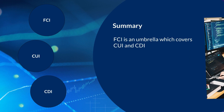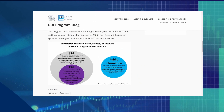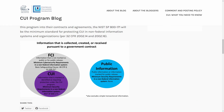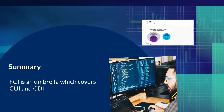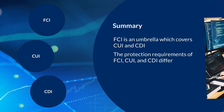FCI is an umbrella which covers CUI and CDI. In a blog article, the National Archives Information Security Oversight Office stated that all CUI in possession of a government contractor is FCI, but not all FCI is CUI. We also learned that the protection requirements of FCI, CUI, and CDI are different. With that said, let's summarize each type of information.